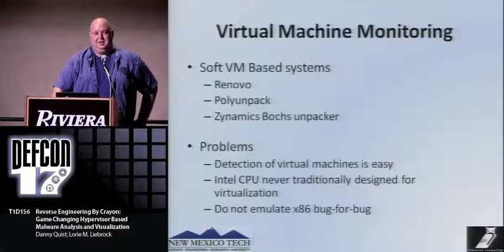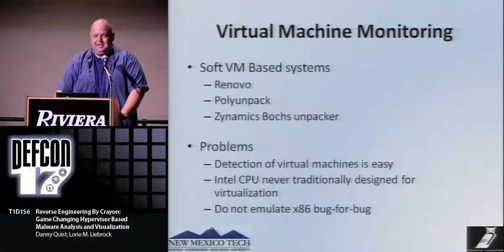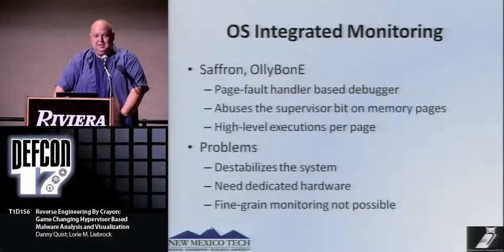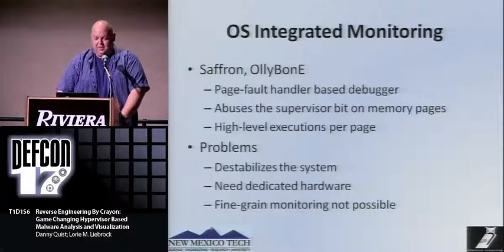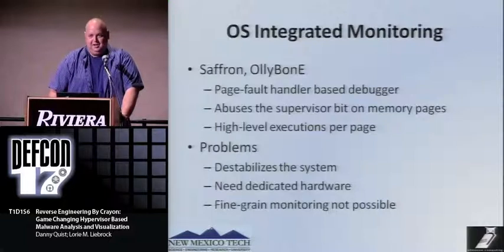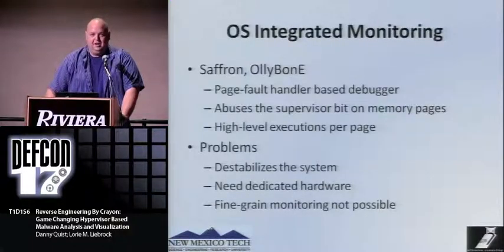Software-based virtual machines — things like Renovo, PolyUnpack, and the Zynamics Box Unpacker — have problems because detecting them is actually pretty easy. The Intel CPU was never really meant to support virtualization, and they don't emulate bug-for-bug. OS-integrated debugging tools like Saffron and Ollybone abuse the page fault handler, setting a supervisor bit on running pages. The problem with Saffron is it destabilized the system — it was good at unpacking something once, but if you wanted to do anything else you basically had to reboot. It also couldn't do any fine-grained monitoring — you got things only at page boundaries.